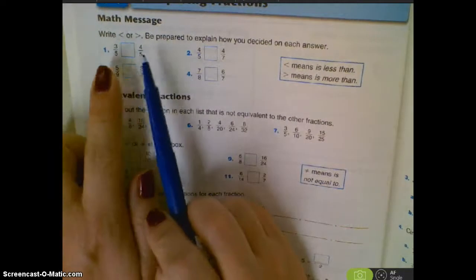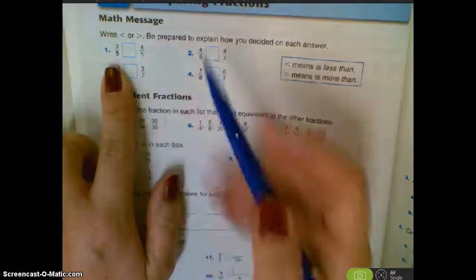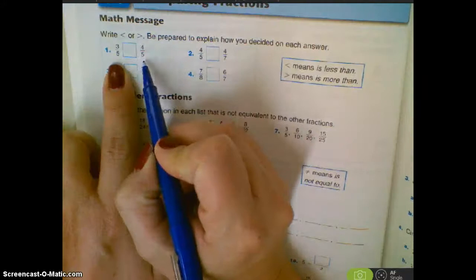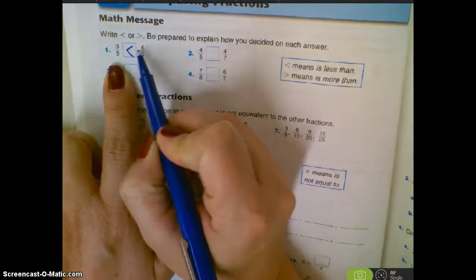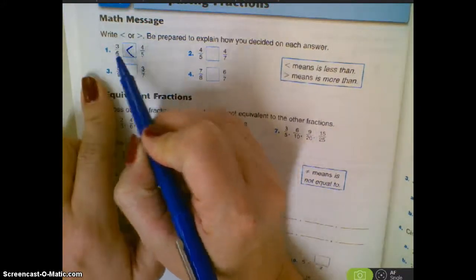So we are comparing fractions, trying to figure out how we know which one is bigger. Since these have the same denominator, we know four-fifths is bigger, because our numerator, this one is one bigger than that.